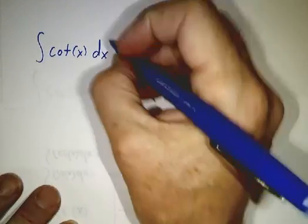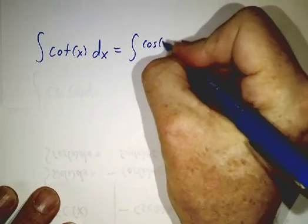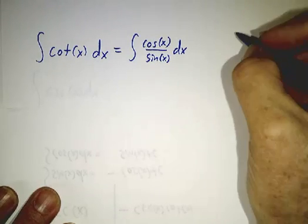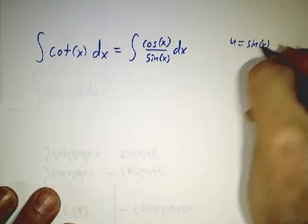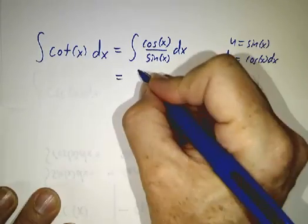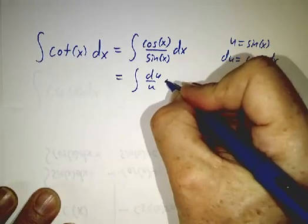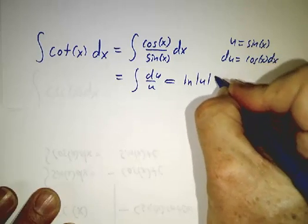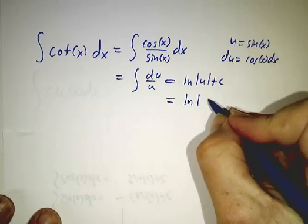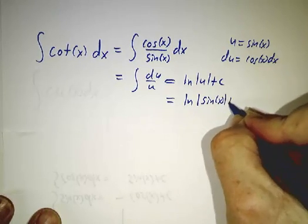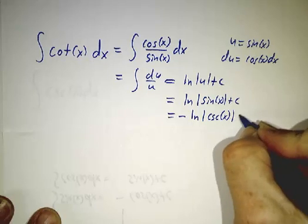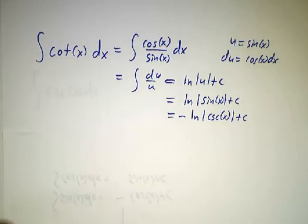Next we've got cotangent. This is the integral of cosine over sine. We do a u-substitution where u equals sin of x, so du equals cos dx. This just gives us the integral of du over u, and that is the natural log of u plus a constant. So you can write that as the natural log of sine of x plus a constant, or minus the natural log of the cosecant of x plus a constant — all of those are equivalent.